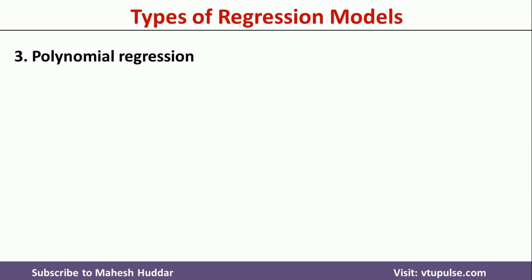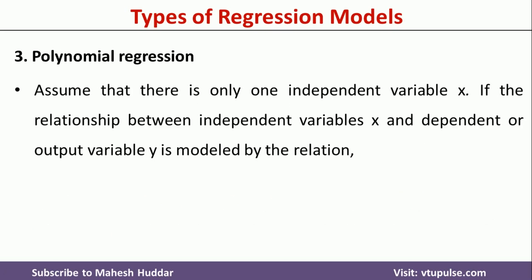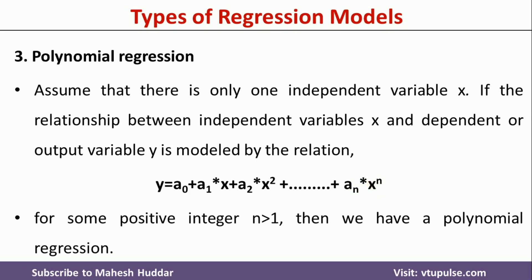Coming to the third one, that is polynomial regression. There will be only one independent variable x, and we want to find the relationship between this independent variable and the dependent variable y. It is modeled using the equation y = a0 + a1*x + a2*x² + ... + an*xⁿ, for some value of n which is greater than 1. If n is greater than 1, it becomes polynomial regression; if n is equal to 1, it becomes the simple linear regression model.